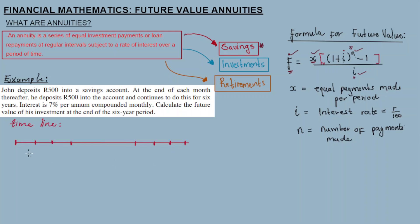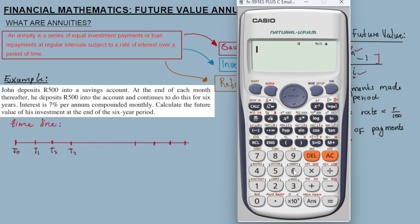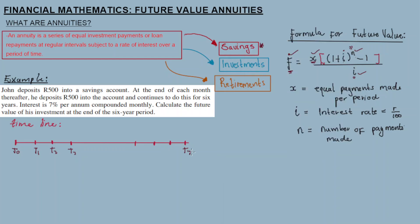I like using timelines so that we can track the transactions in the account for any given problem. We start at T0, then T1, T2, T3, and so on. The number of months in a six-year period is 6 times 12, which equals 72. So there are 72 months, meaning 72 repayments to be made.